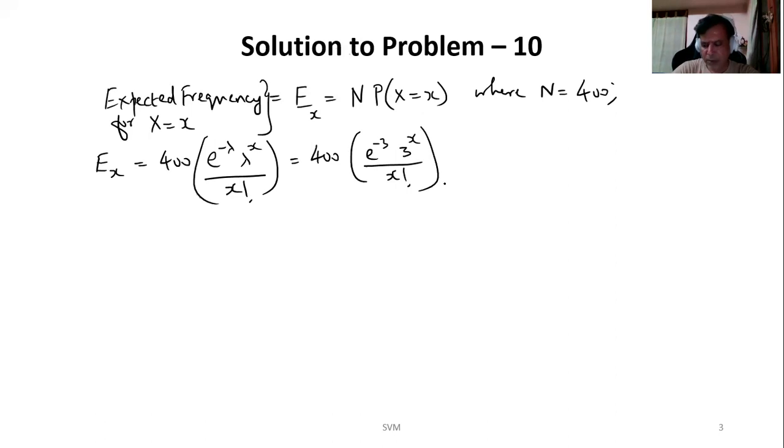Now e power minus 3 we can get it from either tables or using a scientific calculator. By substituting that and multiplying it with 400, we will get the result as 19.915 times 3 power x divided by x factorial. So that will be our expected frequency formula.